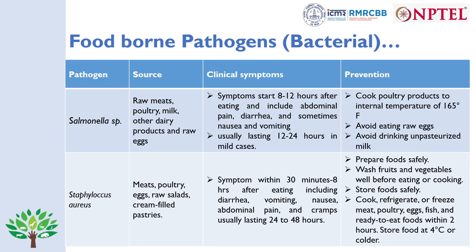Salmonella common sources are raw meats, poultry, milk, other dairy products, and raw eggs. Symptoms include diarrhea, abdominal pain, and sometimes nausea and vomiting, usually lasting 12 to 24 hours in mild cases. Prevention includes cooking poultry products to an internal temperature of 165°F, avoiding raw eggs, and avoiding unpasteurized milk.